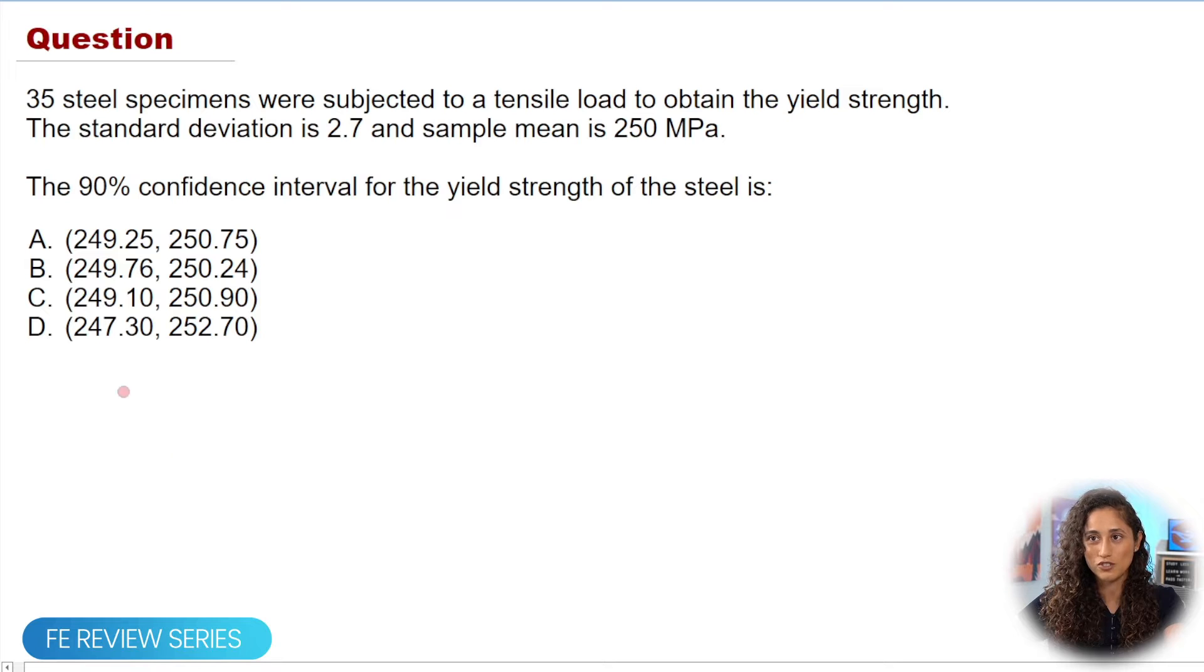Let's take a look at the question. So we have 35 steel specimens were subjected to a tensile load to obtain the yield strength. The standard deviation is 2.7 and the sample mean is 250 megapascal. And we want to determine the 90% confidence interval for the yield strength of the steel.